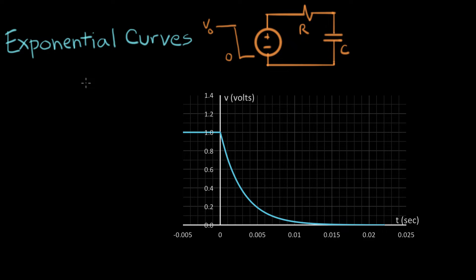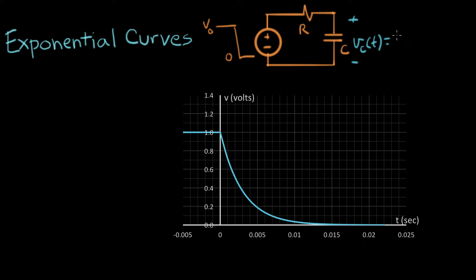Now I want to show you a really useful manual skill that you can use when you have voltages that look like exponentials. We're going to talk about this exponential curve here that's generated as part of the natural response of this RC circuit. We worked out that the voltage across the capacitor, V of T, its natural response is equal to V-naught times e to the minus T over RC. This value of V-naught is the starting voltage that our input source provides, and then it immediately steps down to zero, and this circuit then does its natural response.